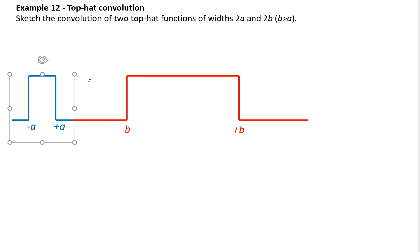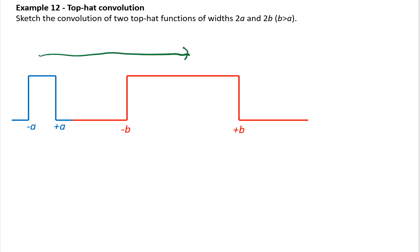We have two top-hat functions with widths 2a and 2b where b is greater than a. I've sketched the two top-hat functions. To find the convolution, we offset one of the functions — in this case the blue function — by an amount equal to x. Because both functions are symmetrical about x equals zero, the offset is just the center-to-center distance, which we call x. We then introduce a dummy variable and integrate over the product of the two functions; the value of that integral is the convolution at that specific value of x.